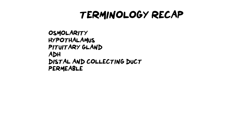As always, let's finish with a terminology recap. Osmolarity is the way in which we measure how much water and salt or solutes is in the blood. When we say osmolarity is increasing, it means there is more salt in the blood and less water. If we say it's decreasing, that means there is more water and less salt in the bloodstream, and we need to regulate that.